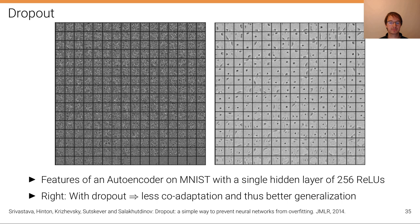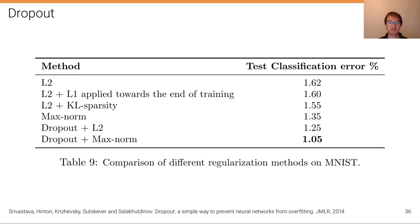This can be also seen from this plot. This is test classification error on this dataset, where these last two models have used dropout in combination with some other regularization techniques and lead to improved performance compared to not using the dropout ensemble technique effect.